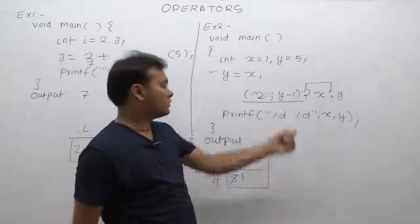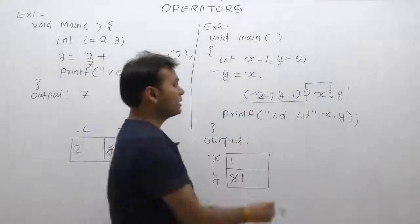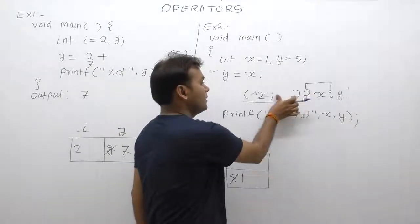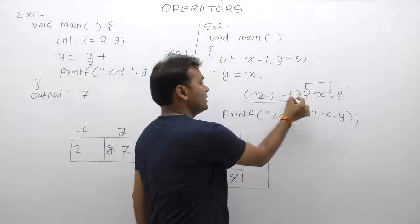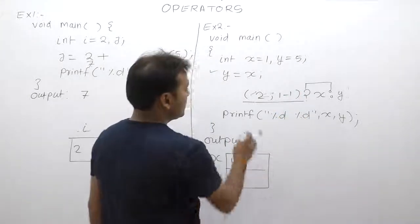then y minus 1, 1 minus 1 becomes again 0, 1 minus 1 is 0, therefore final case,